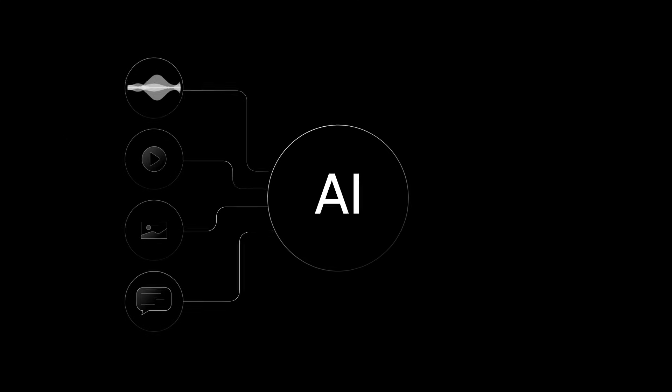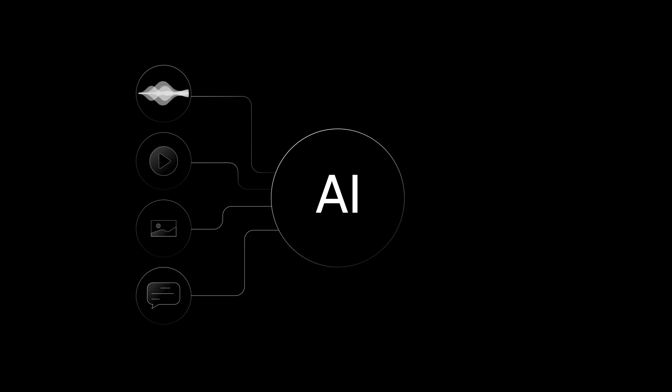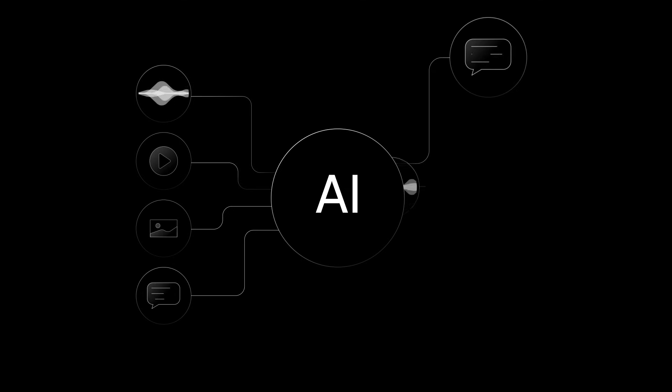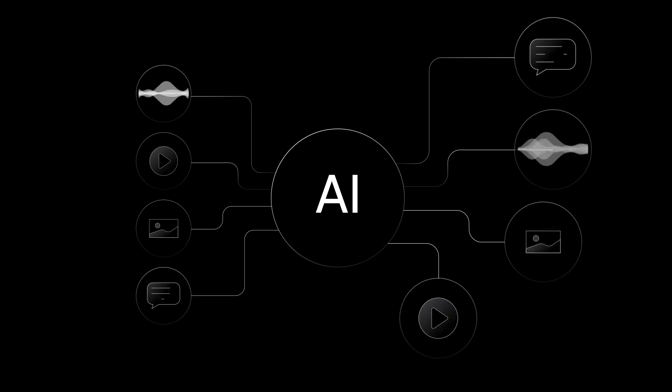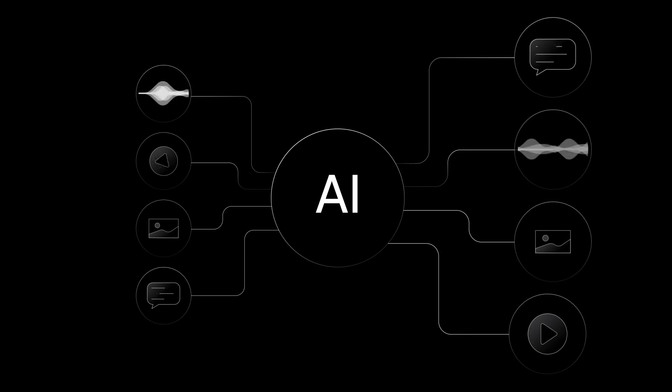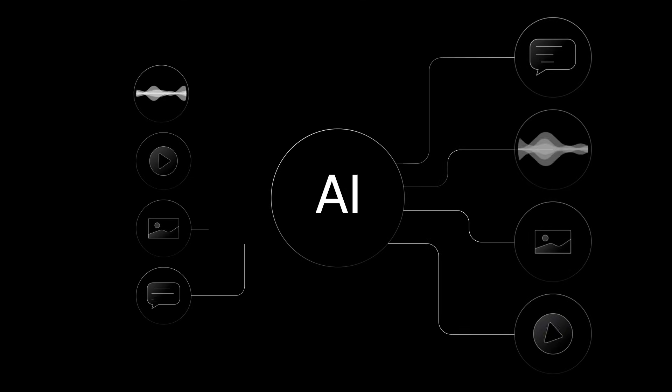Multimodal AI simply refers to AI that can input, process, and output multiple forms of data, including text, speech, images, and video. One example is Google's Gemini model.